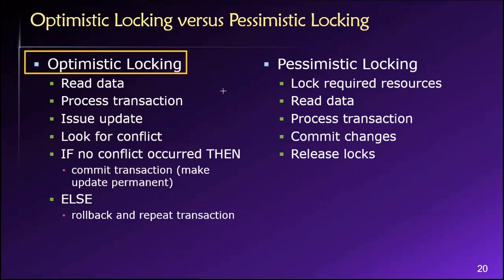There's not going to be any conflict — meaning no one else is going to be touching the same data we're using at the same time. So if we choose the optimistic approach, we'll usually get better performance out of the database given the same hardware configuration and the same number of users. However, it will only deliver that performance increase in situations where the probability of a resource conflict is low.